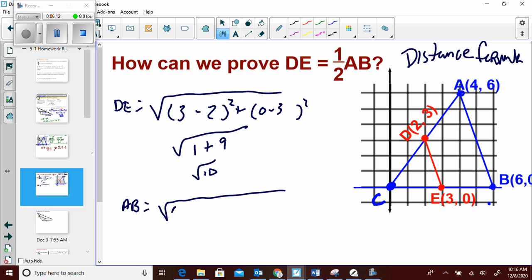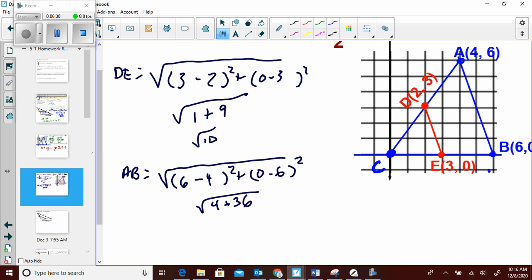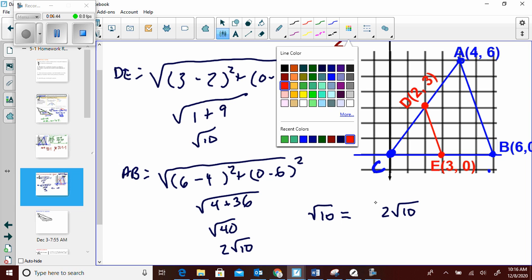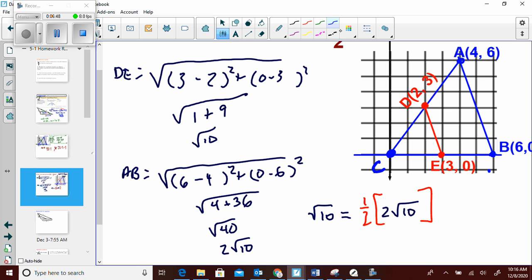AB, we're going to do the same concept. All right. So this is our distance formula. We've done tons of distance formula. I know it's our favorite. 6 minus 4. 0 minus 6. 2 squared is 4. Negative 6 squared is 36. Radical 40. Remember, if we break that down, 2 radical 10. So is radical 10 equal to one half times 2 radical 10? I think so. Radical 10 is radical 10. So that's how we show it works. Distance formula to show the lengths are half, and slope to show that they're parallel.